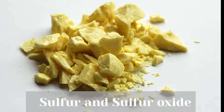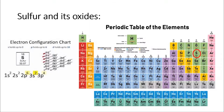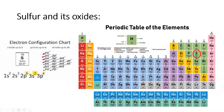Sulfur and sulfur oxides. Sulfur is a non-metallic element found in the second period and group number 16 in the periodic table. From the group number, which is 16, you can see that it has six valence electrons, two of which are in the 3s orbital and four in the 3p orbital.